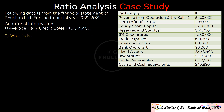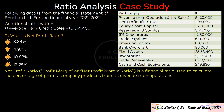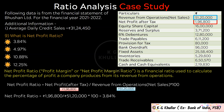The next question is: What is Net Profit Ratio? Net Profit Ratio, also known as Profit Margin or Net Profit Margin Ratio, is a financial ratio used to calculate the percentage of profit a company produces from its revenue from operations. It is calculated as Net Profit After Tax divided by Revenue From Operations multiplied by 100. That is Rs. 1,96,800 divided by Rs. 51,20,000 multiplied by 100, which equals 3.84%. The correct option is option A.